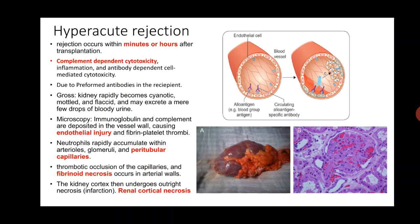This process involves complement-dependent cytotoxicity and antibody-dependent cell-mediated cytotoxicity. It is due to preformed antibodies within the recipient. If the recipient has had prior blood transfusions, they were exposed to HLA antigens of other humans, leading to formation of antibodies against HLA antigens. These antibodies circulate in the blood, so when the patient receives an allograft, they already have preformed antibodies against the donor's HLA antigens.